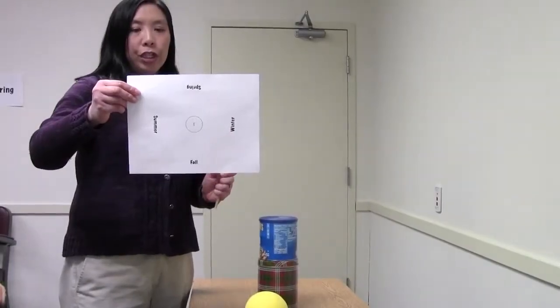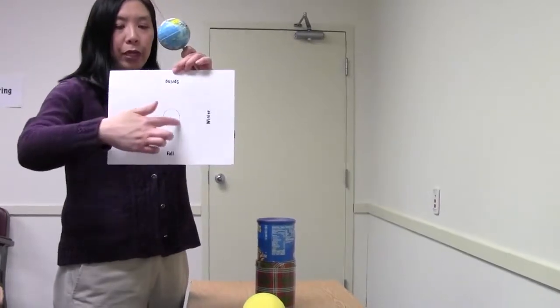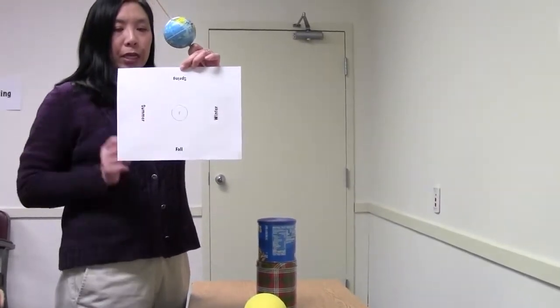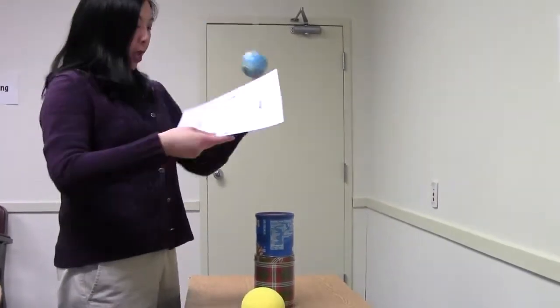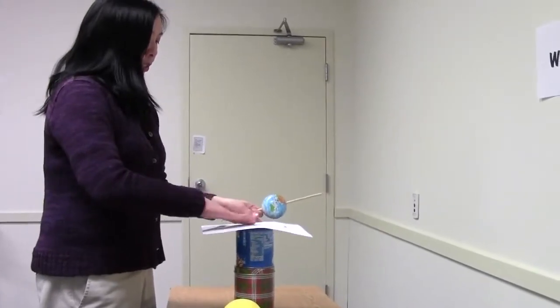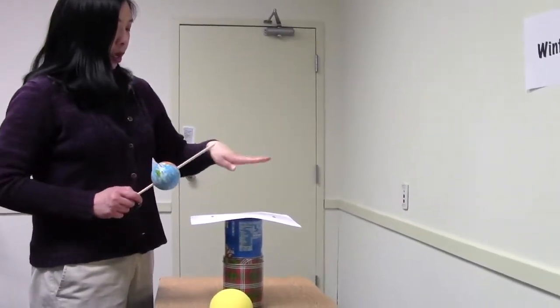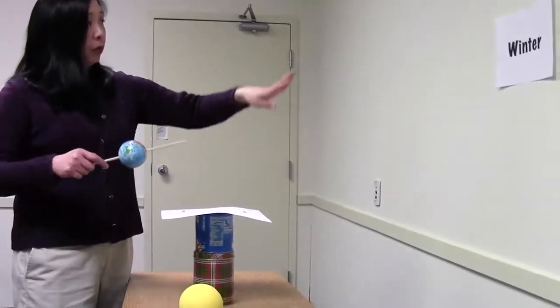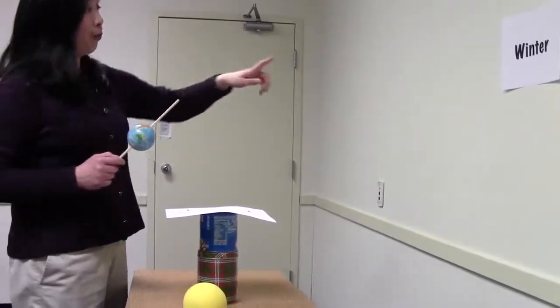The students all have a sheet that has the sun in the middle and the seasons represented around the sun, and they have to orient this so that the points of their paper line up with the signs around the room.